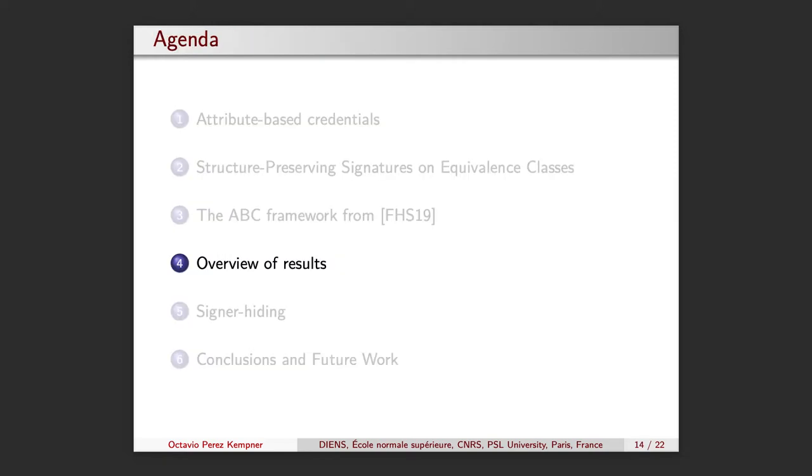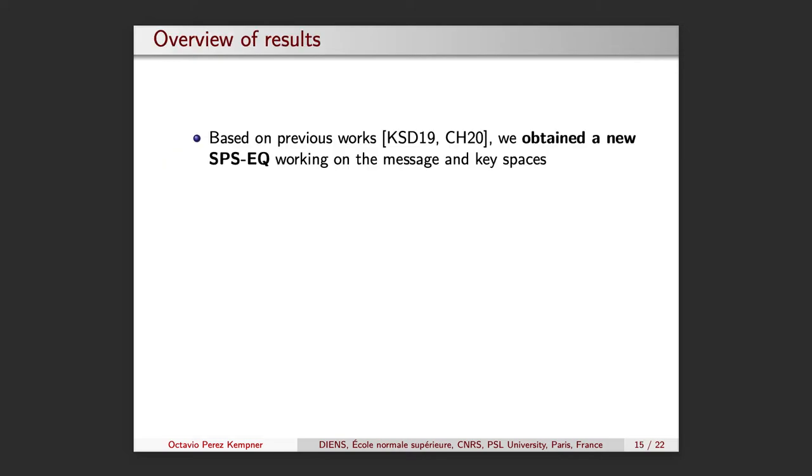Let's now have an overview of the results. We obtained a new structure-preserving signature on equivalent classes which acts on both the message and the key spaces. Our departure point was a recent scheme proven secure under standard assumptions which we modified to obtain a mercurial signature and to use a different non-interactive zero-knowledge argument for our proof that improved its efficiency.